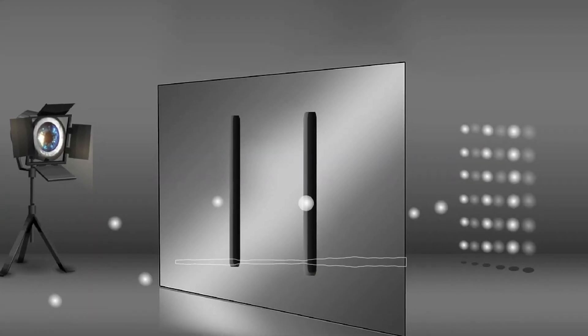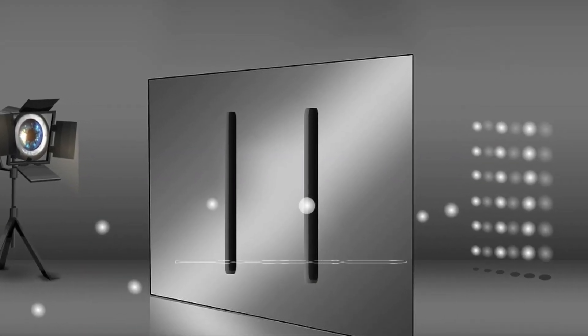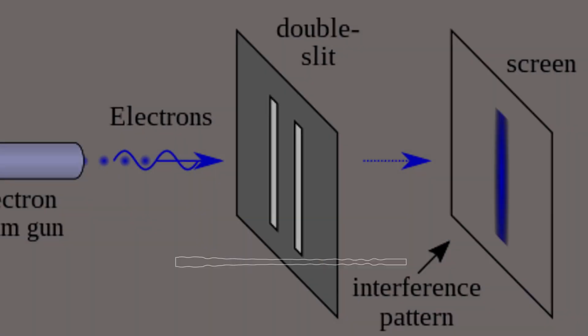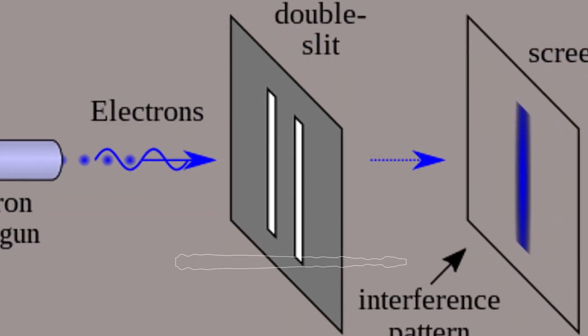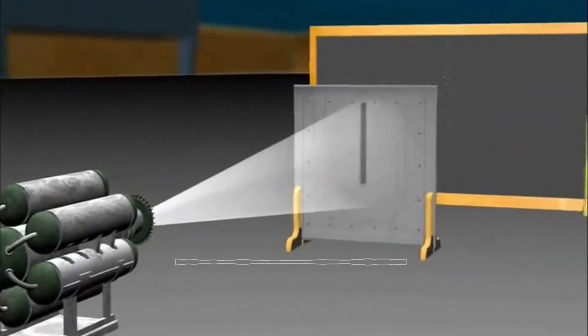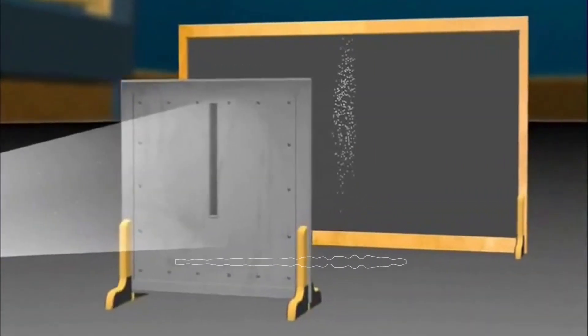This experiment involves shining a beam of particles, such as electrons or protons, through a barrier with two slits. Behind the barrier, a screen awaits which records the pattern of particles that reach it.